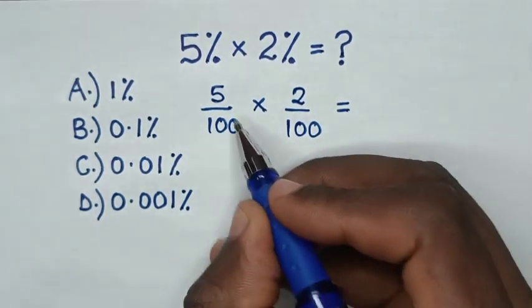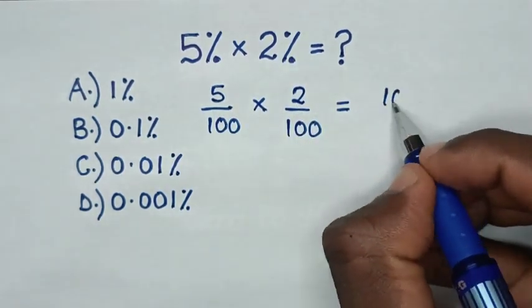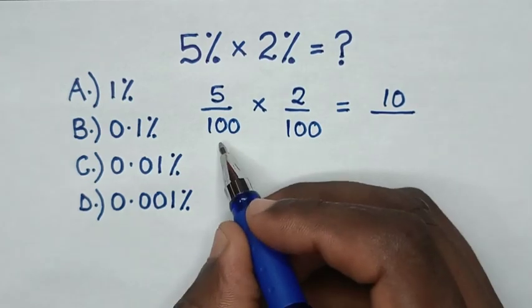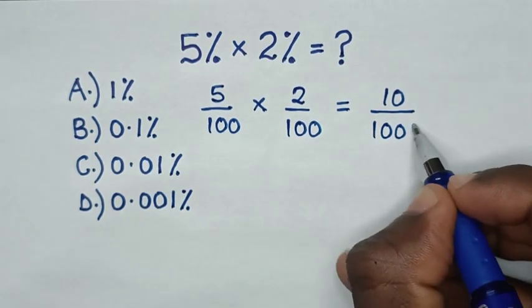Then it will be equal to 5 times 2 is 10, over 100 times 100 is 10,000.